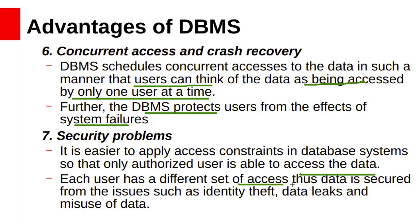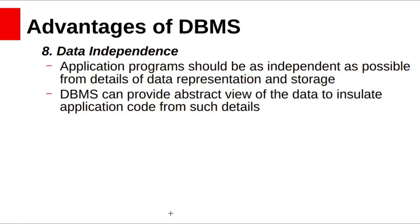Security: Each user has a different set of access privileges, so data is secured from issues such as identity theft, data leaks, and misuse of data. Not every user within the database has the same access level, so data can be protected. Data independence: DBMS provides data independence, meaning application programs are independent from the details of data representation and storage. DBMS can also provide an abstract view of data — it provides only necessary details and hides the implementation details. We will see these concepts in more detail while discussing database system architecture.